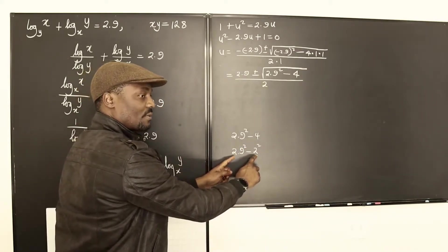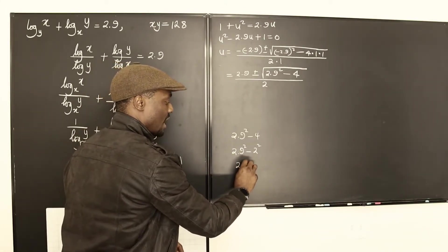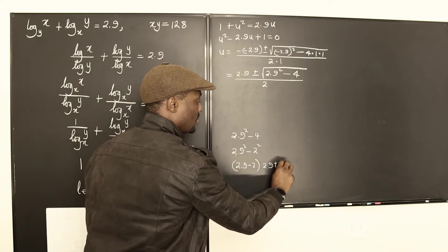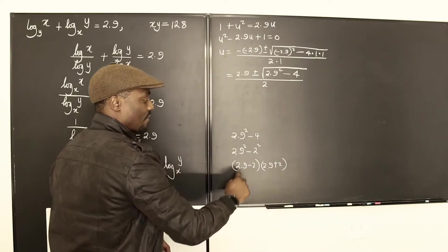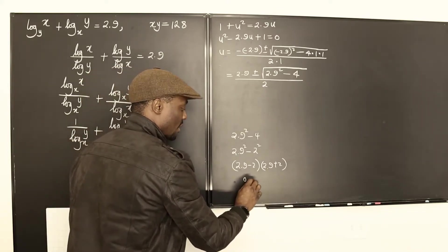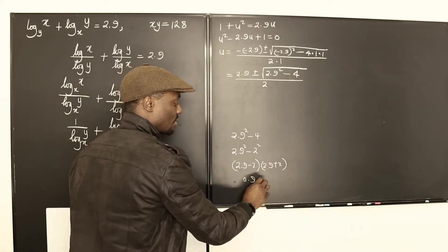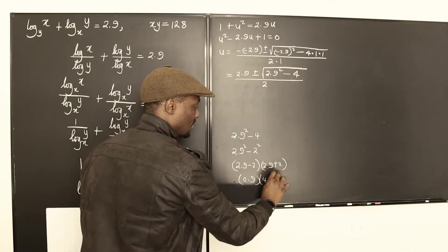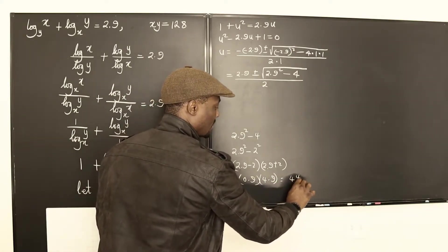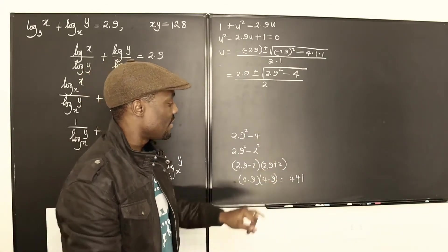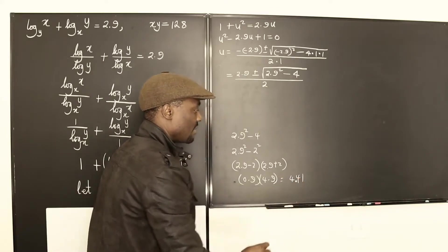which is 2.9 minus 2 and 2.9 plus 2. Look at that. What is 2.9? 2.9 minus 2. That's 0.9. And what is 2.9 plus 2? That is 4.9. If you multiply these two together, you're going to get 441. Now, that's what we're going to have here with a decimal point here. I just did the math here. You could use a calculator if you want, but I just don't like calculators.